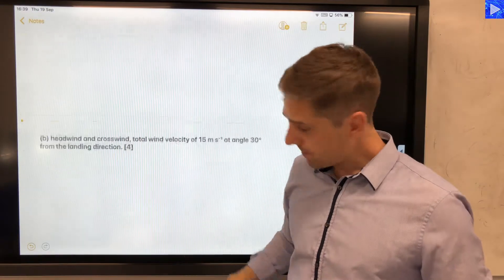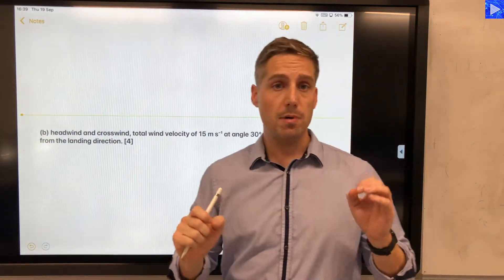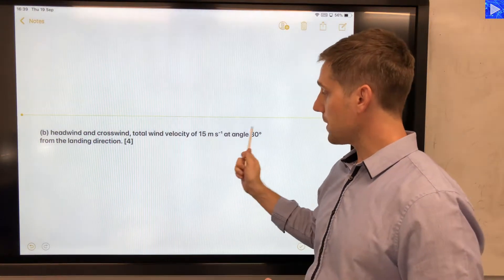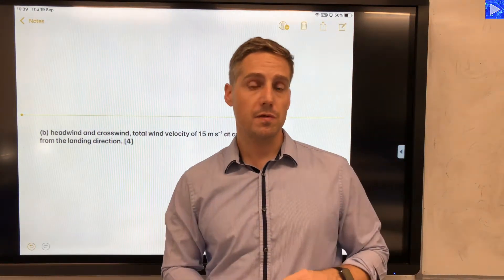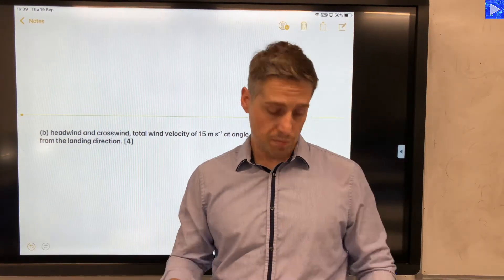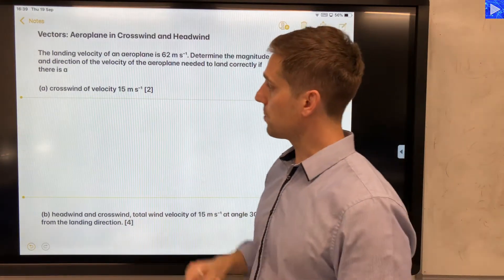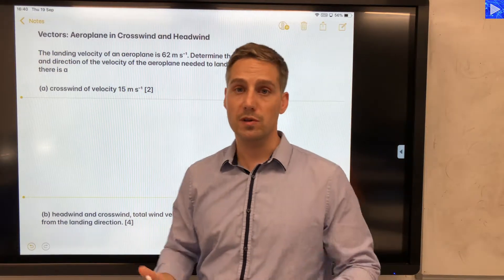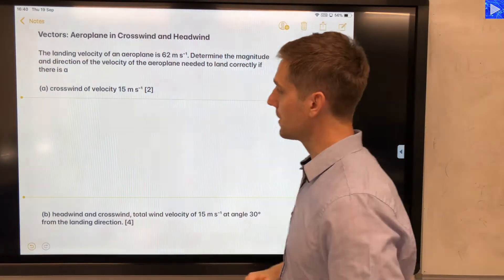In the second part of the problem we have a combined headwind and crosswind of magnitude 15 meters per second at an angle of 30 degrees from the landing direction. So that's the problem stated. Let's get stuck into the first part where we are solving for just a simple crosswind velocity of 15 meters per second.